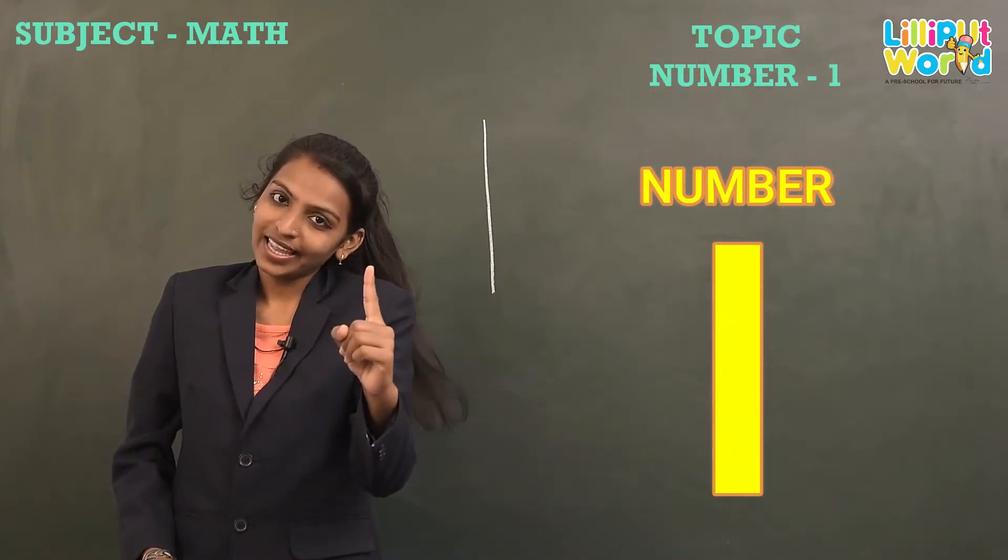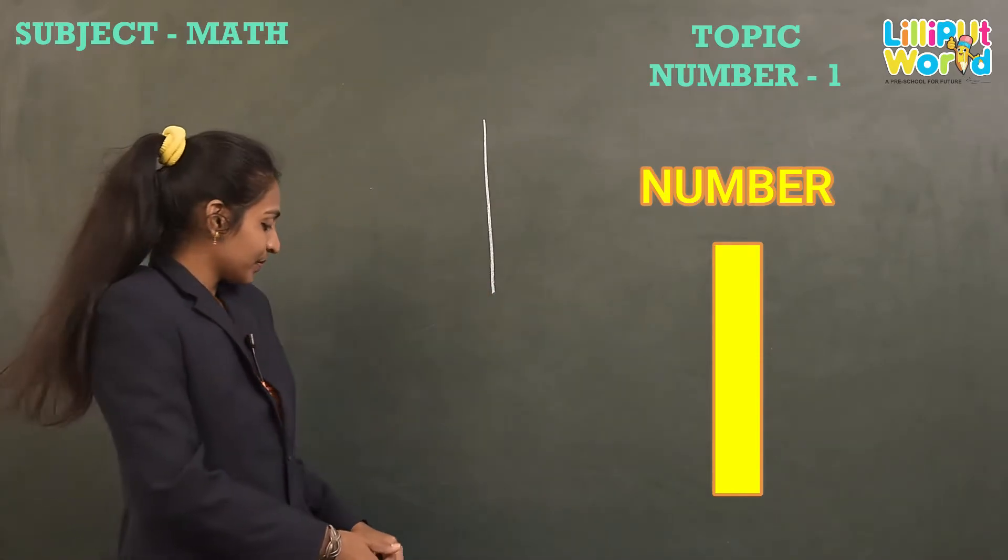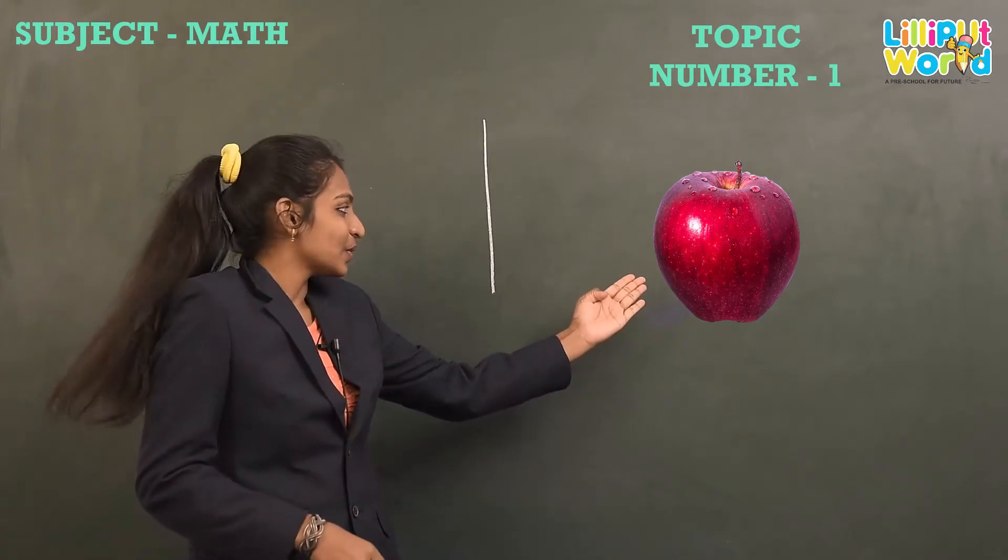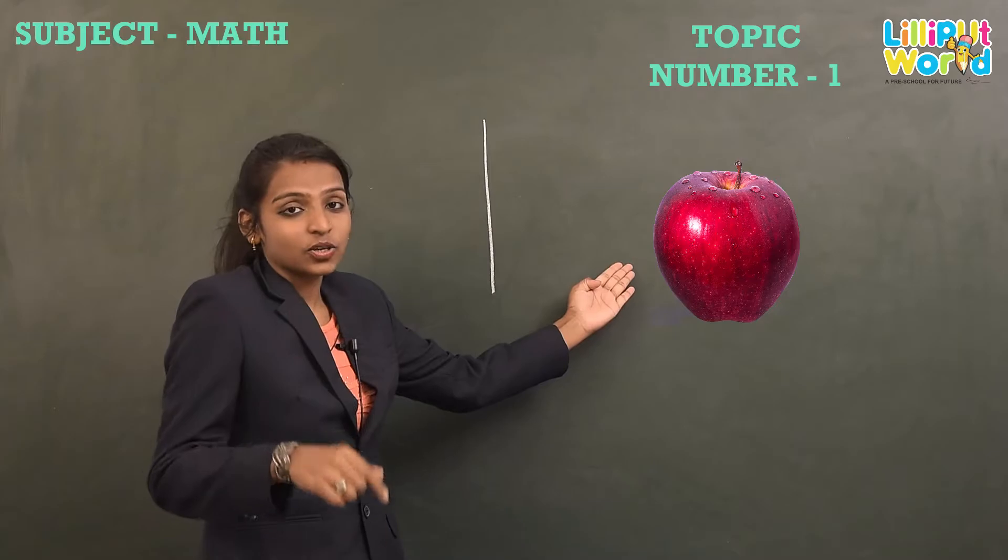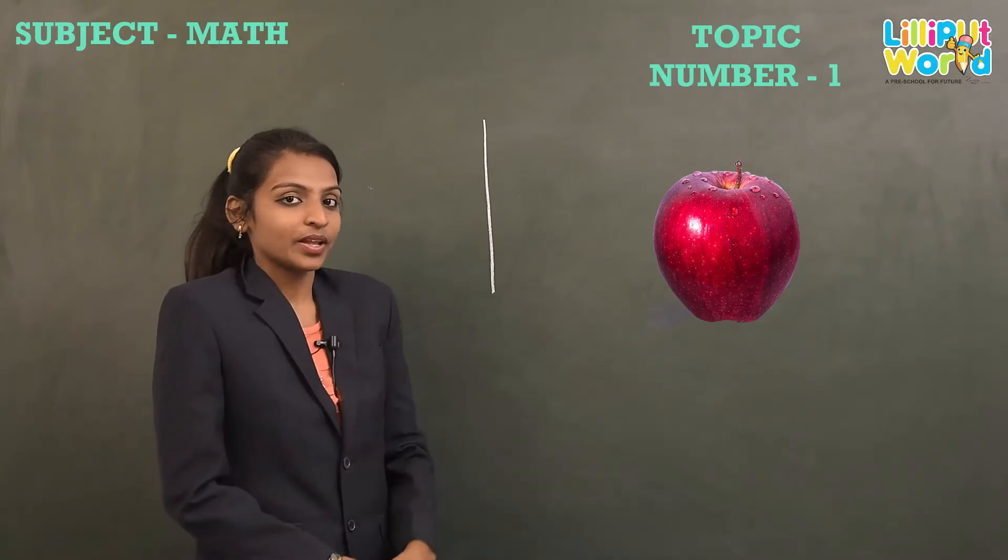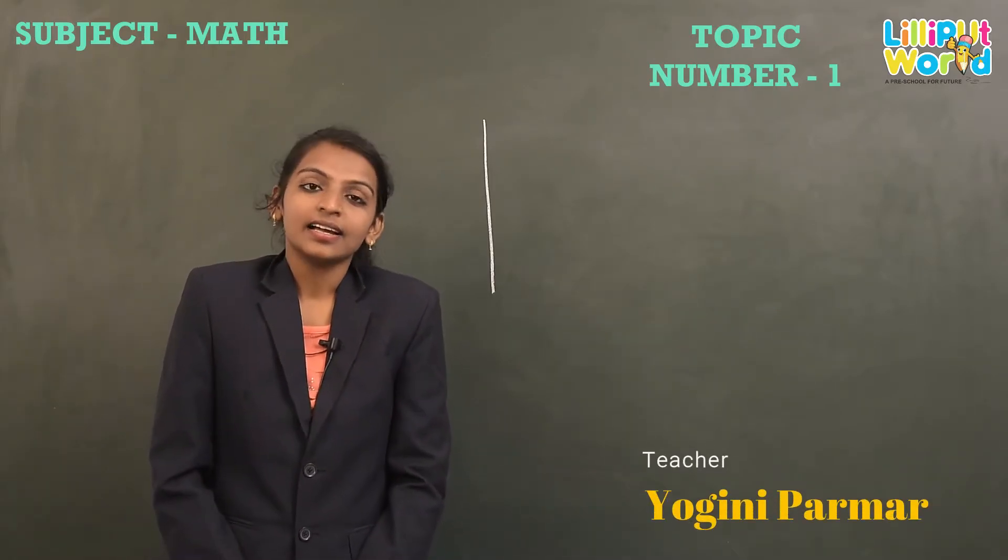This is number one. What can you see here? Only one object. So counting is very easy - only one object. Now you have to practice in slate, then we will do it in the book.